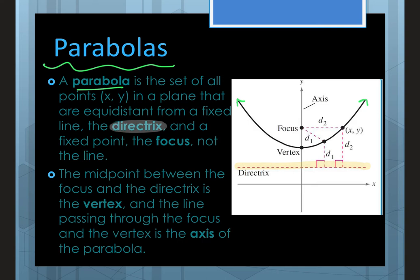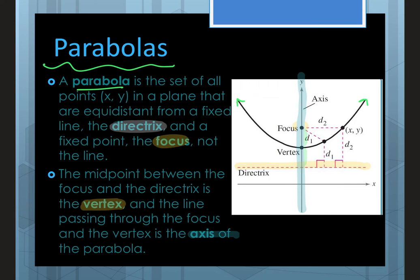The focus is a fixed point inside the scoop of the parabola — the parabola folds around the focus and points away from the directrix. The distance from the vertex to the focus equals the distance from the vertex to the directrix; that distance is called p. The midpoint between the focus and directrix is the vertex. The axis of symmetry passes through the vertex and is always perpendicular to the directrix.